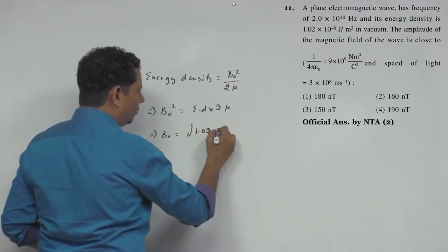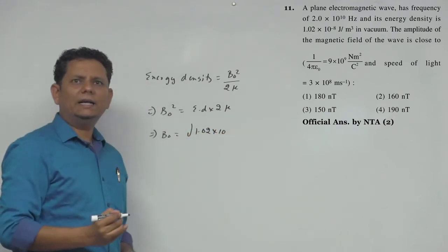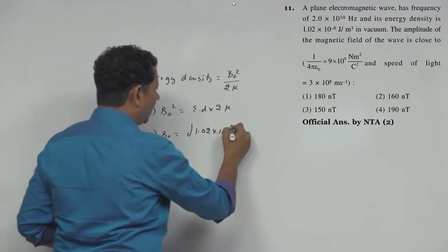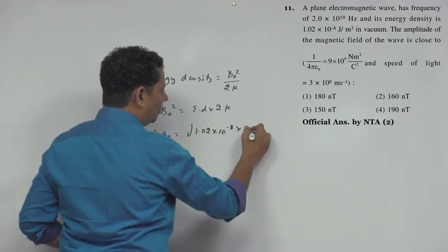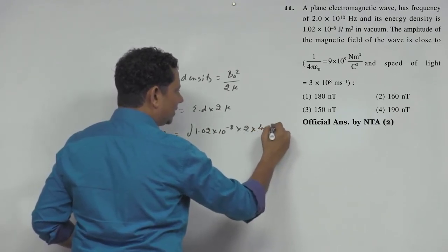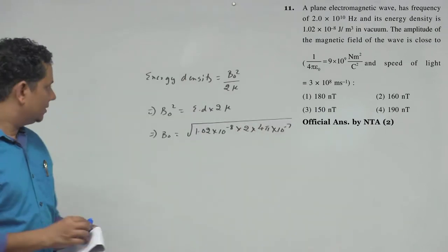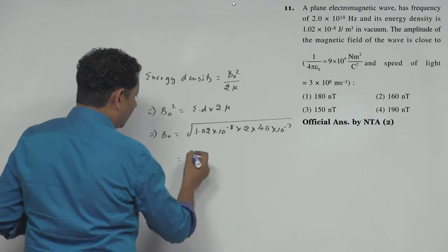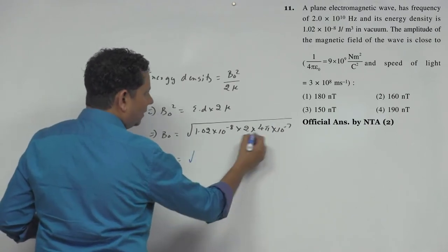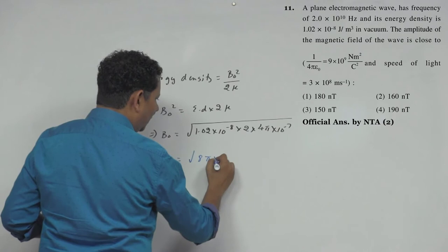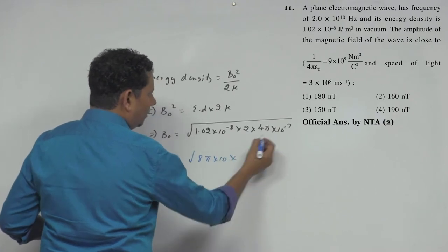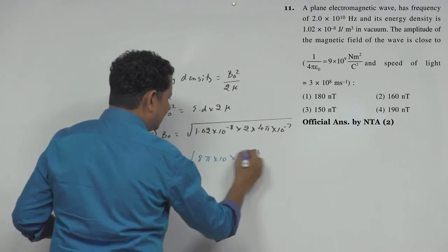Energy density is 1.02 multiplied by 10 to the power minus 8 multiplied by 2 multiplied by mu. Mu value is 4 pi into 10 to the power minus 7. All right, this will be equal to approximately 8 pi multiplied by 10 multiplied by 10 to the power minus 16.